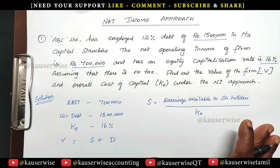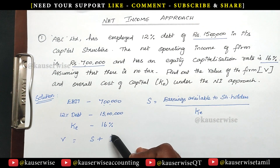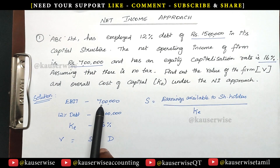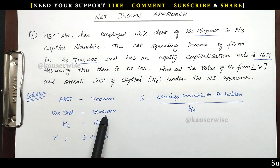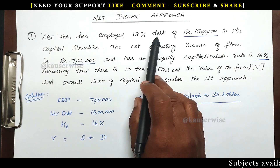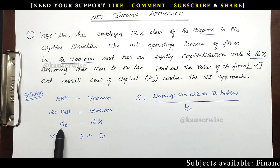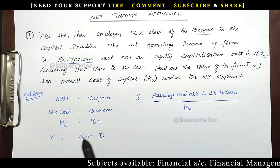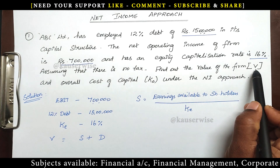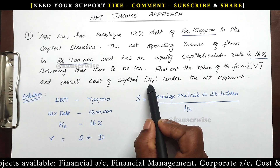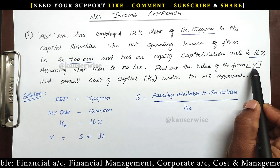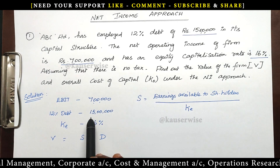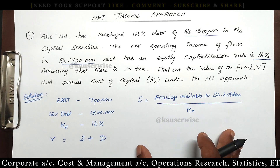Now let's see the solution. From the problem we have the following information: EBIT, that is net operating income, is 7 lakhs. D, the 12% debt, is 15 lakhs. And KE, the cost of equity or equity capitalization rate, is 16%. The formula for value of the firm is V equals S plus D. D is given in the problem, so we first need to find S — the market value of equity shares.